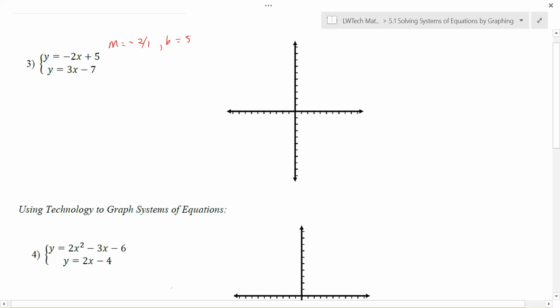And we can plot that without too much trouble over here on our graph. 1, 2, 3, 4, 5 is our y-intercept. Slope of negative 2 over 1. We can use that down 2 over 1 to grab a couple of points here along the way. Kind of like that. Connect the dots. So there's one line.